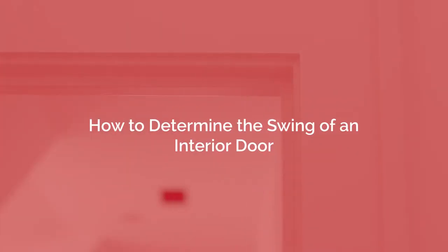We will show you how to determine the swing of a door. I'm walking into the bathroom from the hallway. This door, as you can see, is swinging to the right. You can determine that by taking your back and placing it up against the hinge. So this is a right-hand swing door.